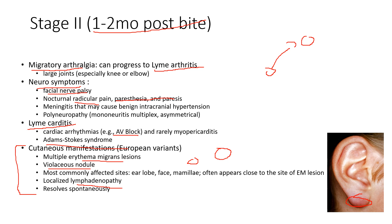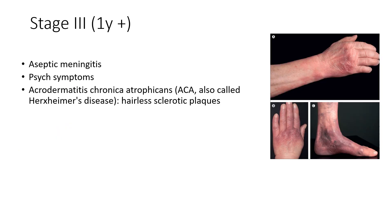To summarize stage two: nerves are the second thing affected after skin, appearing one to two months after infection. Secondary symptoms include facial drooping, meningitis signs with severe headache, and heart block with associated Adam-Stokes where you could pass out. If Lyme isn't caught by stage two and is allowed to progress — perhaps because the person lacks medical care or the disease was never identified — you enter stage three, which begins one year or more after the bite.